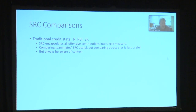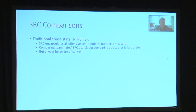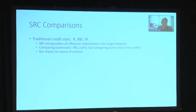How can we compare SRC with other stats? Compared to traditional credit stats, SRC is different in that it's an all-encompassing offensive measure incorporating all contributions into one single metric. It includes knocking in other players, advancing runners, advancing yourself with a stolen base, scoring a run, and getting on base to be scored. Comparing SRC for teammates is useful, particularly within a game or series. Because it's a context-specific statistic by design, you have to be aware of context — for example, accounting for run-scoring environments when comparing across eras.